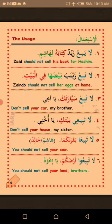Al-Istimal — now the usage. Wahid, number one: La-yabi' Zaydun kitabahu li-Hashim — Zayd should not sell his book to Hashim. Ithnan, number two: La-tabi' Zaynabu baydaha fi-l-bayt — Zaynab should not sell her eggs at home.